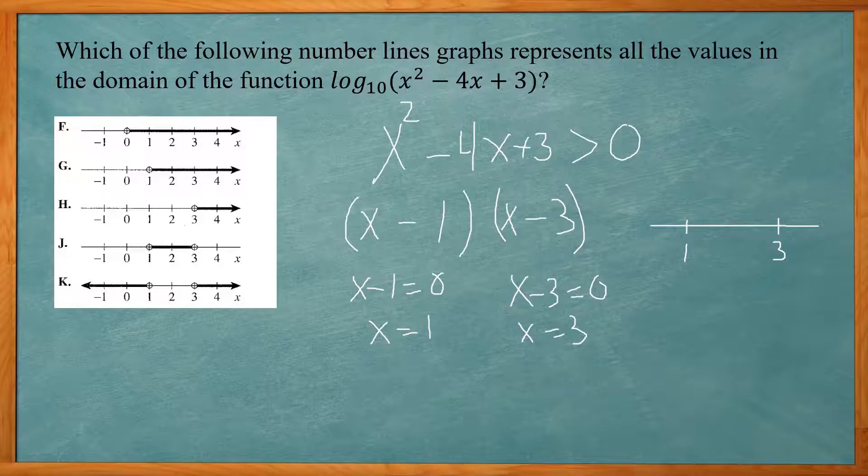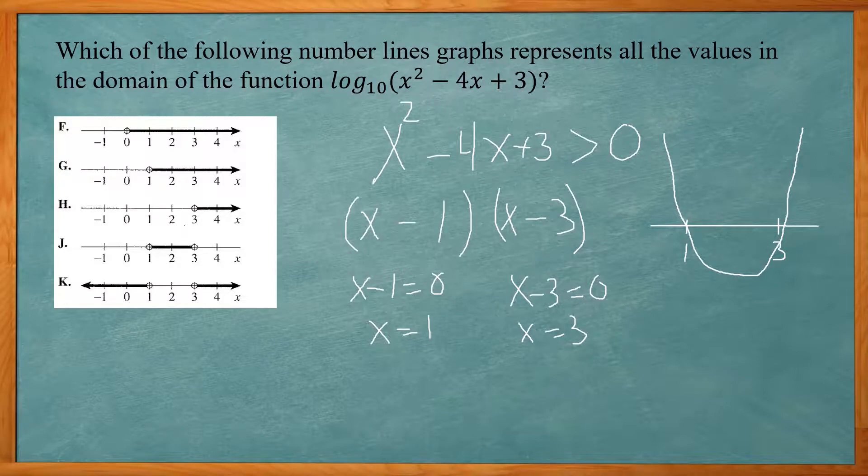The coefficient of the x squared is positive. So it's going to open upwards. So everything above the line is going to be greater than 0.